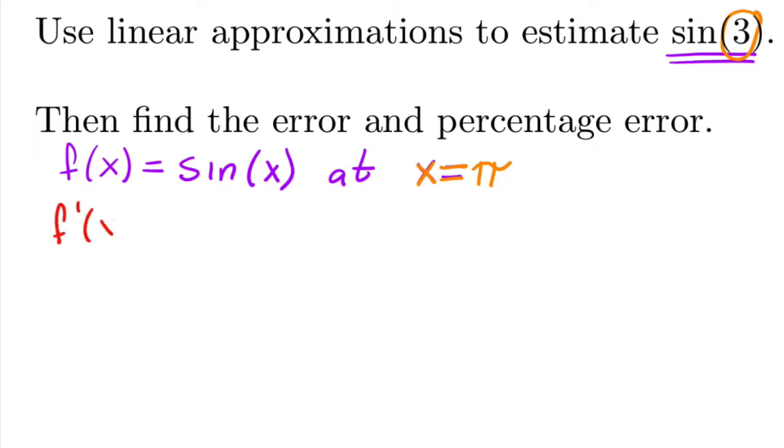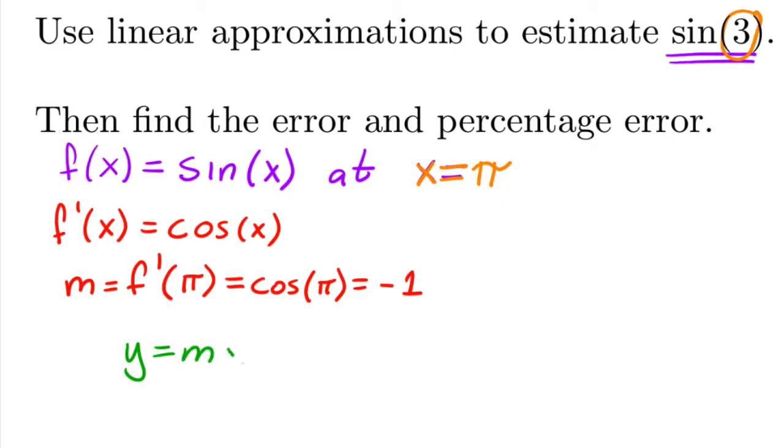So we need to find the derivative, which is a derivative of sine is cosine. Okay, so then the slope is the derivative at π, which is cosine of π, which is just negative 1. Okay, so then to find the y-intercept, we have y equals mx plus b, and so we have the slope which is negative 1.